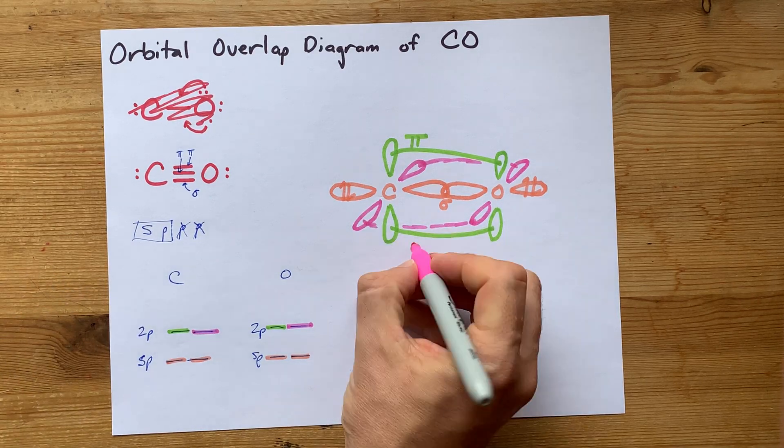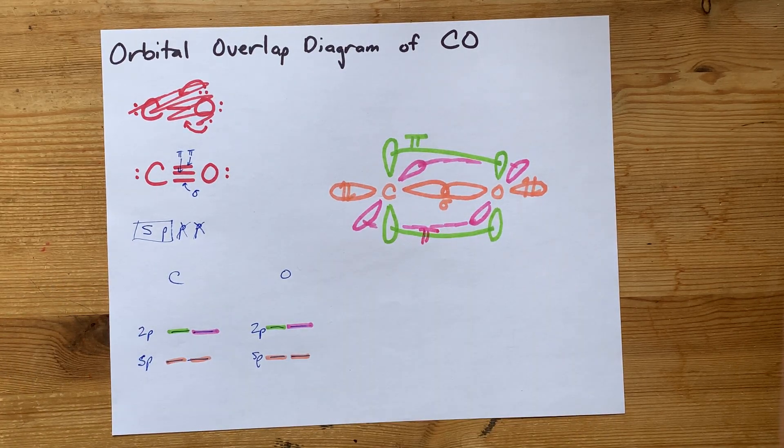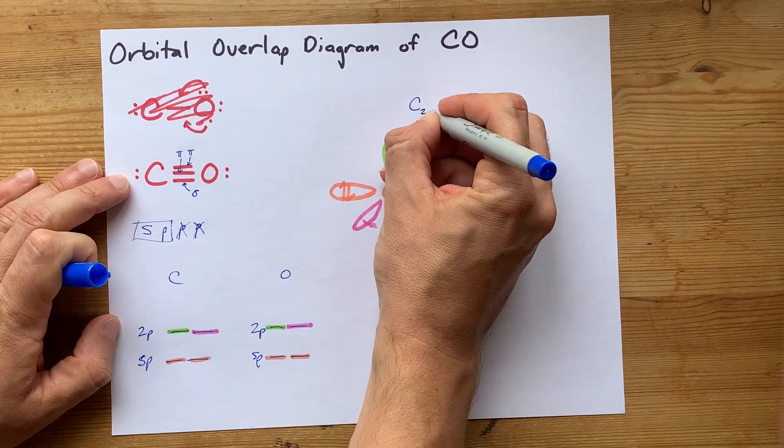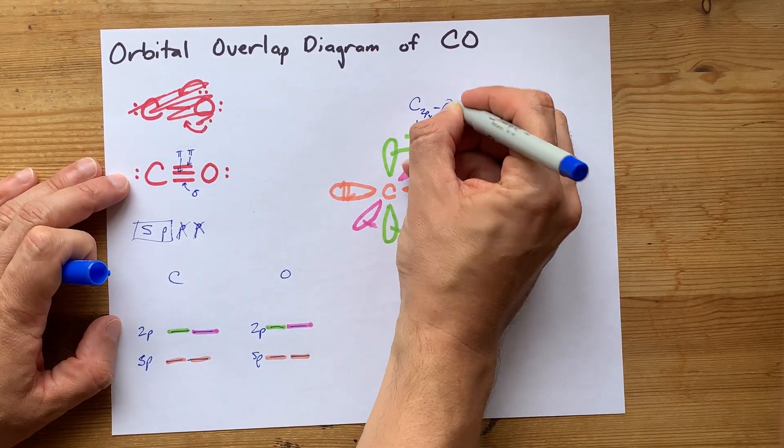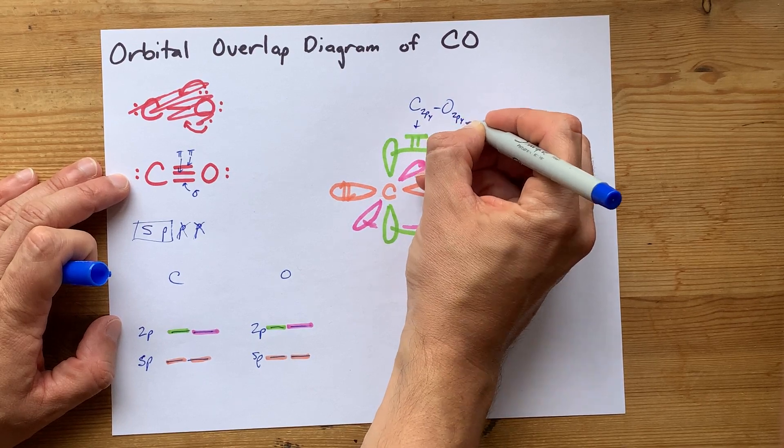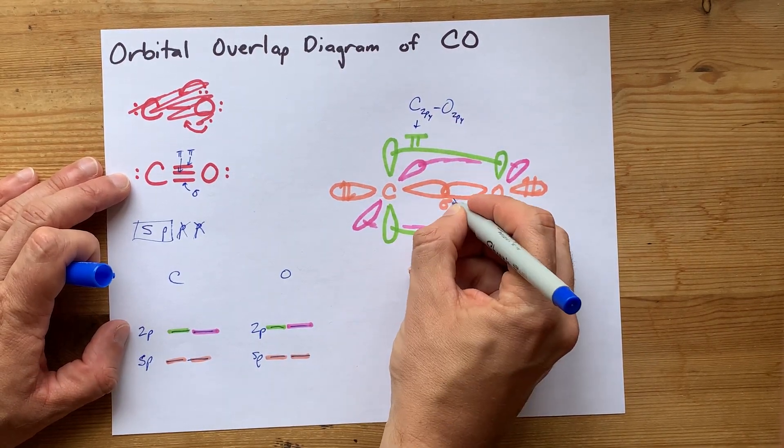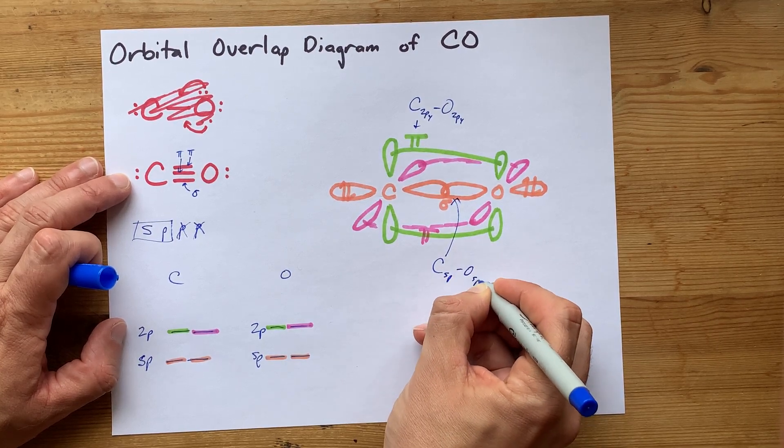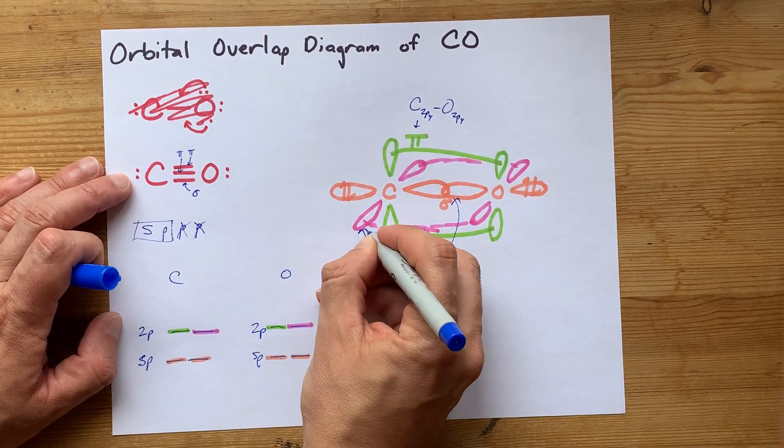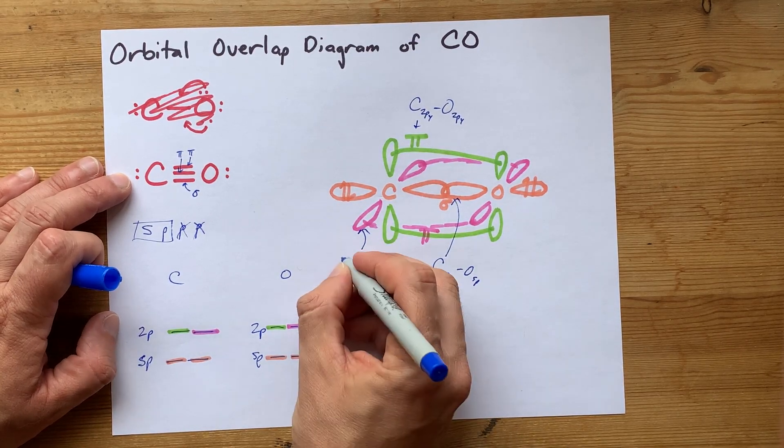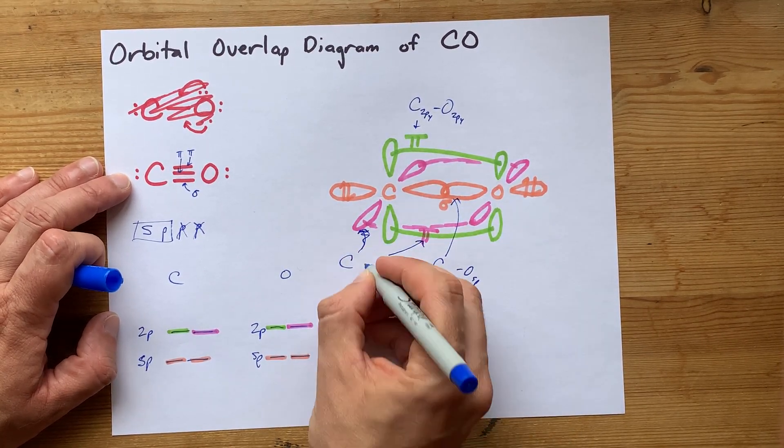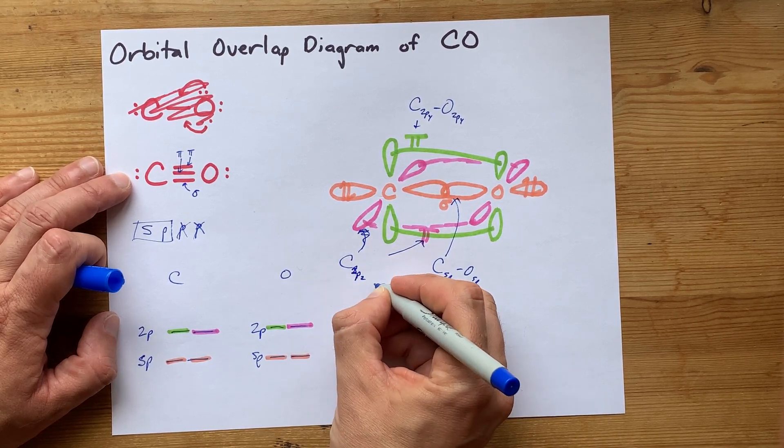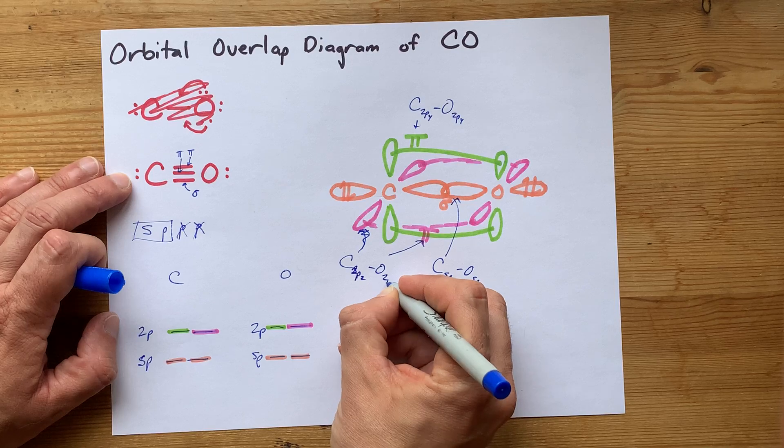Some teachers will have you write how each of the pi bonds is being made, like this here is carbon's 2PY and oxygen's 2PY. This sigma bond here is carbon's SP hybridized orbital and oxygen's SP orbital. And then the pink pi bond is carbon's 2PZ orbital with oxygen's 2PZ orbital.